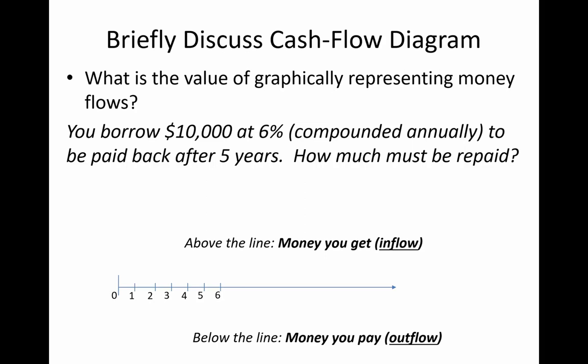Our typical convention is that when considering the situation from our perspective, anytime you get money it's diagrammed as an arrow above the line, and anytime you pay money it's diagrammed as an arrow below the line. The horizontal line represents the passage of time: zero represents the present — now — and then one is one period in the future. Sometimes the period is a year, sometimes a month; it depends on the problem statement.